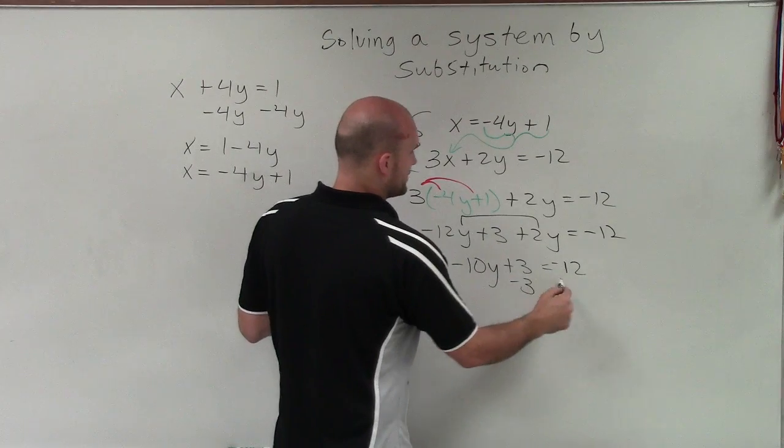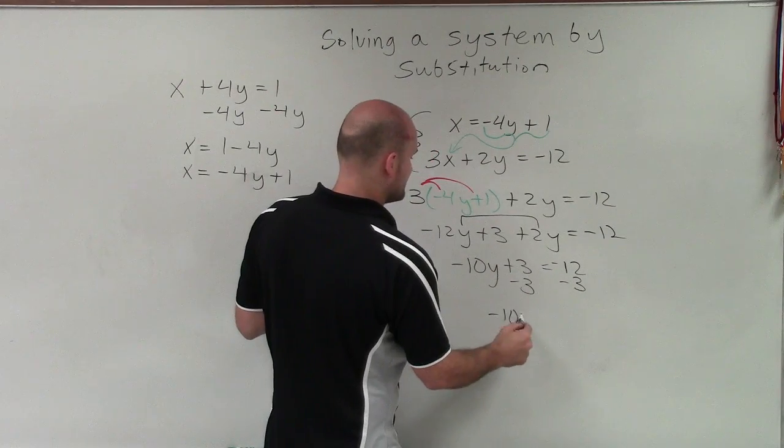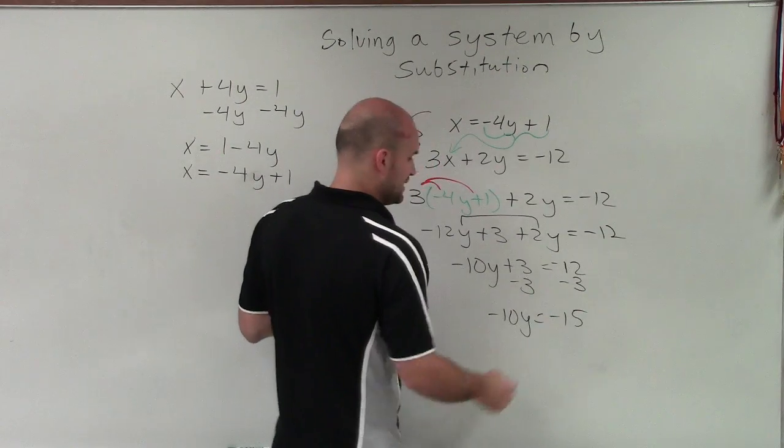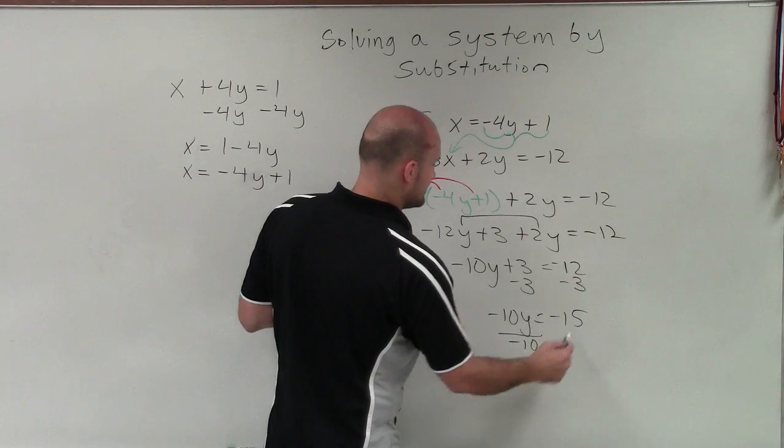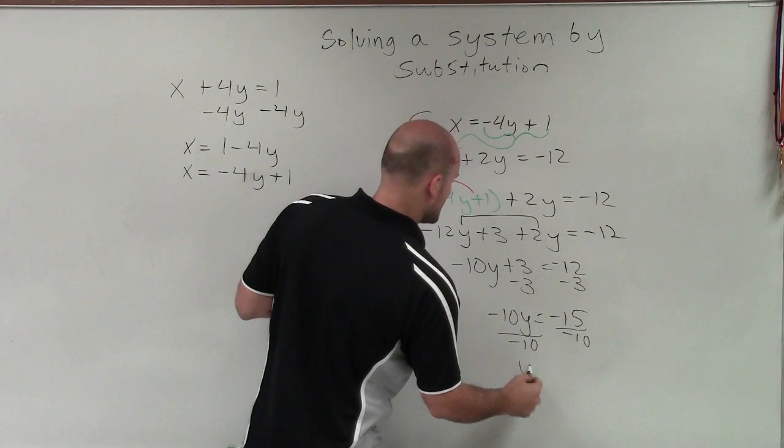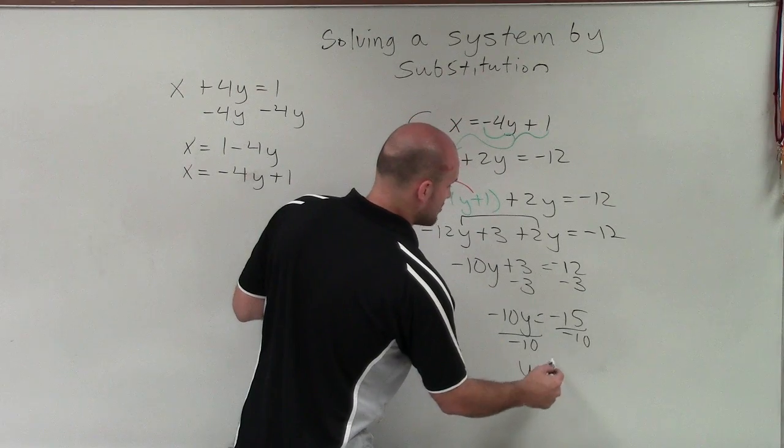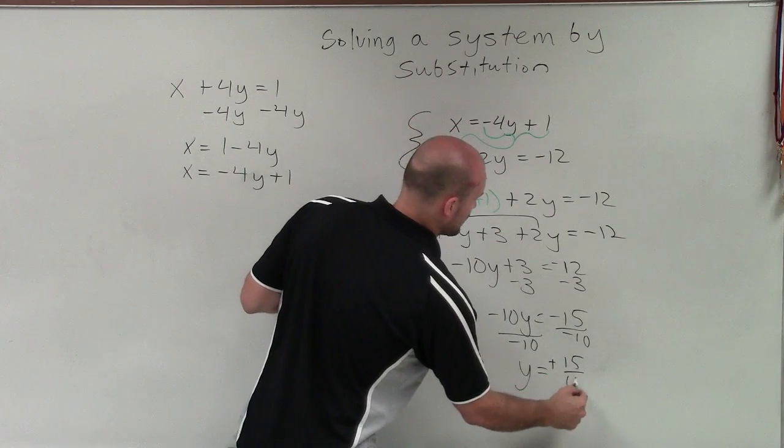Then I subtract 3 on both sides. And I get negative 10y equals negative 15. Then I divide by negative 10. And I get y equals positive 15 over 10.